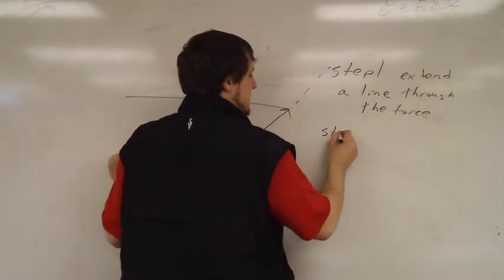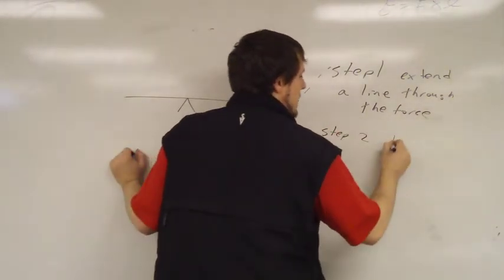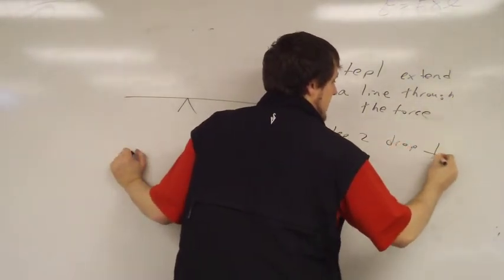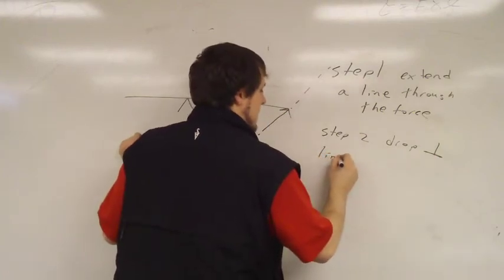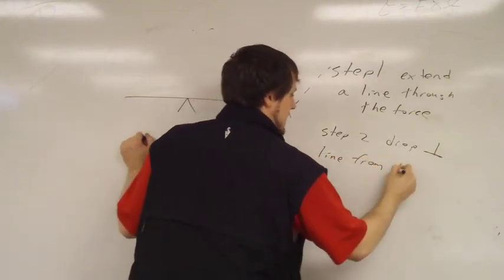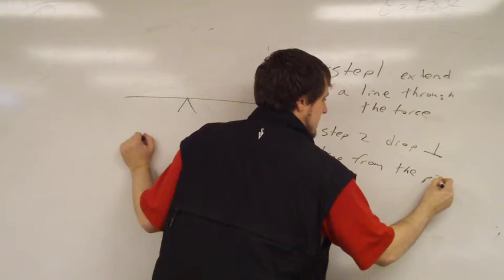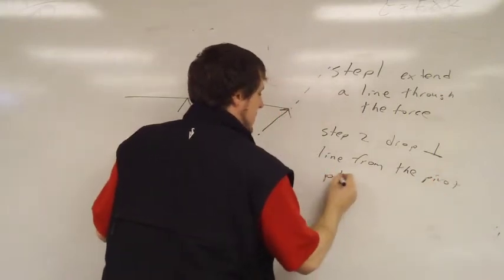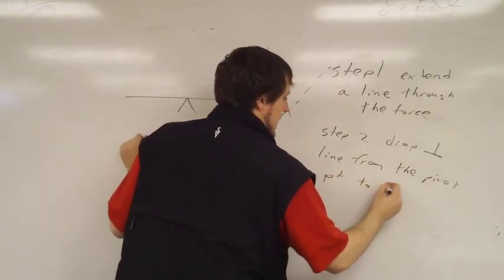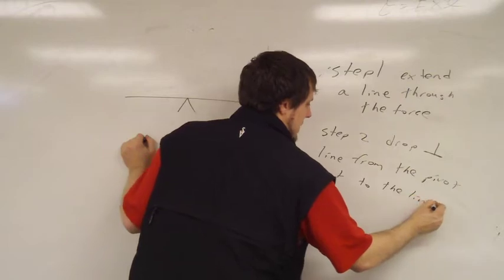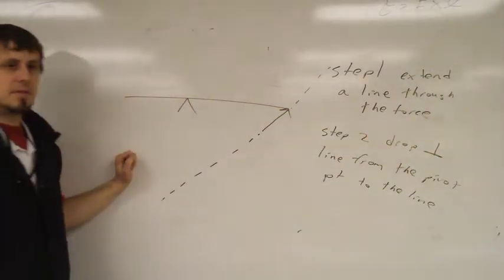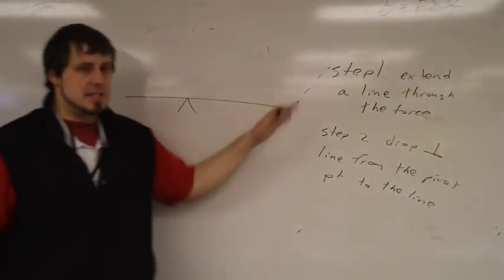Okay. That's step one. Now, step two, you will drop a perpendicular line from the pivot point to the line you made in step one. So, the line from step one. Okay. So, what does that mean?